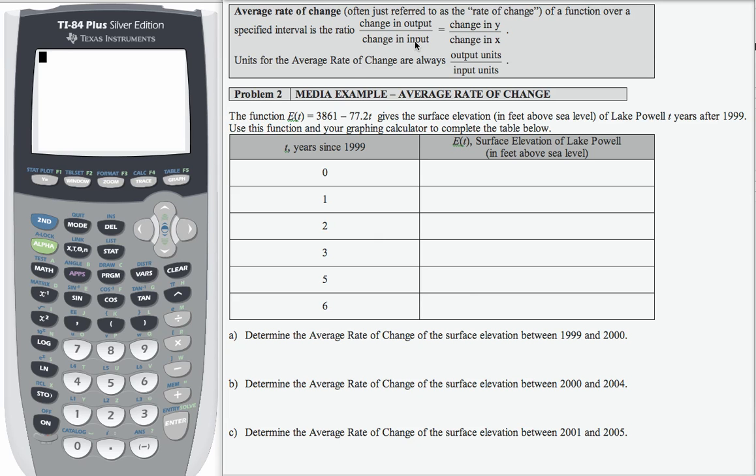Let's see how that works with this problem. The function e of t equals 3861 minus 77.2 times t gives the surface elevation in feet above sea level of Lake Powell two years after 1999. Use the function and your graphing calculator to complete the table below.